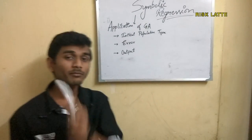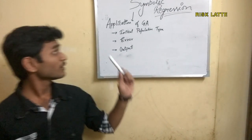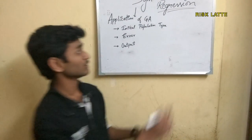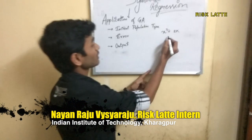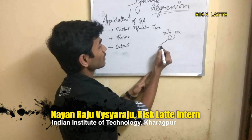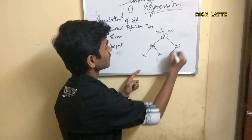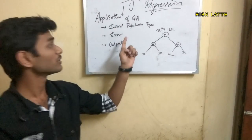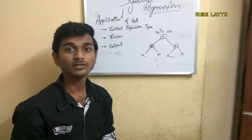So what is different between a normal genetic algorithm and the application of genetic algorithms in symbolic regression? The main thing is the population type. The initial population type here is just an expression. If you consider an expression such as x squared plus 2x, it can be broken into a syntax tree where the plus can be the main nodal point and split accordingly. Each such syntax tree is taken as an individual in the initial population. The error between the expected output and our individual is taken as the fitness function, which is to be minimized.